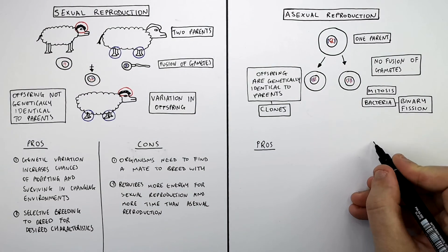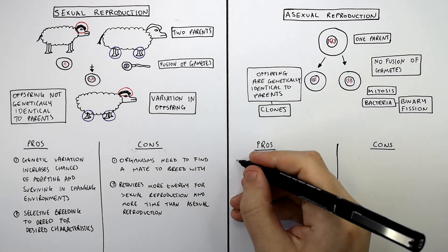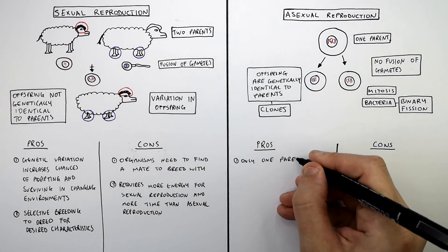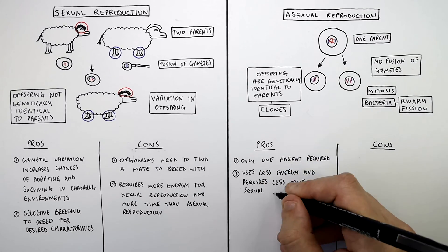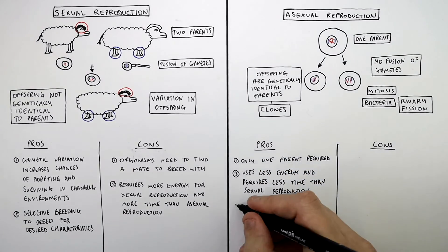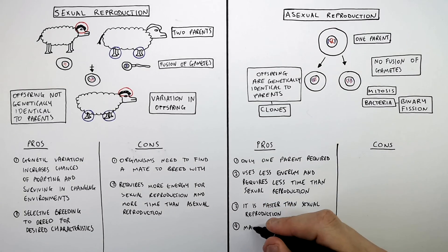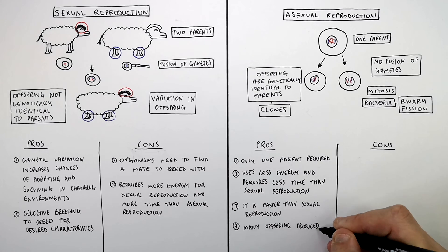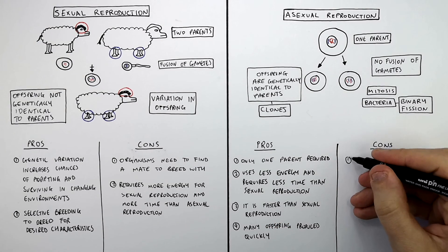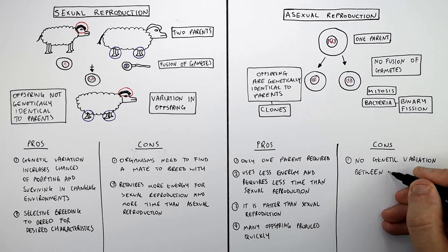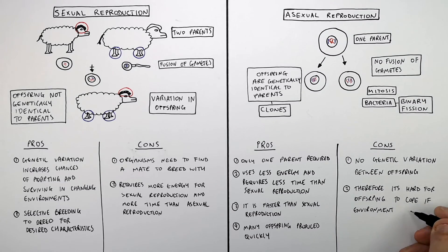Let's now discuss the pros and cons of asexual reproduction. Advantages are that only one parent is required, it uses less energy, requires a lot less time, and is faster than sexual reproduction — many offspring are produced quickly. The disadvantage of asexual reproduction is that there is no genetic variation between the offspring, therefore it's hard for the offspring to cope if the environment changes.